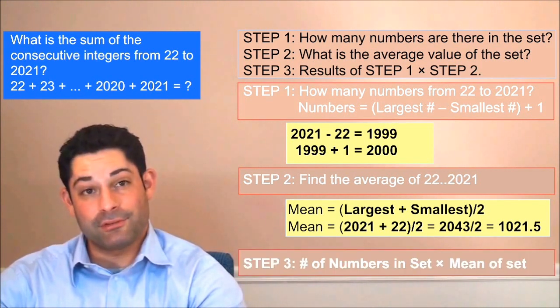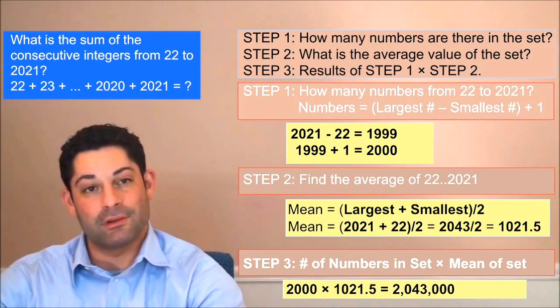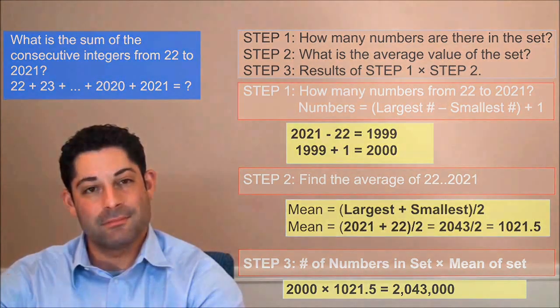In our third and final step we multiply the number of integers 2,000 by the mean 1,021.5 to get the answer to this week's challenge question. 2,043,000.